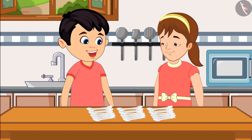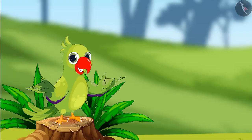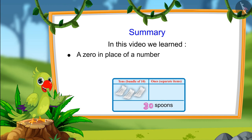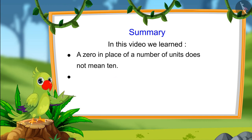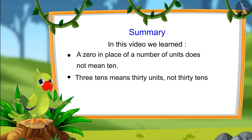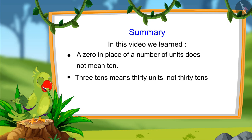So children, that's all for today. In this video we learned that 0 at the end of a number does not mean 10, and 3 tens means 30 units — not 30 tens. I hope you have understood this topic. Bye friends!